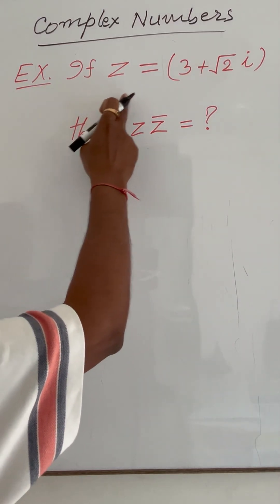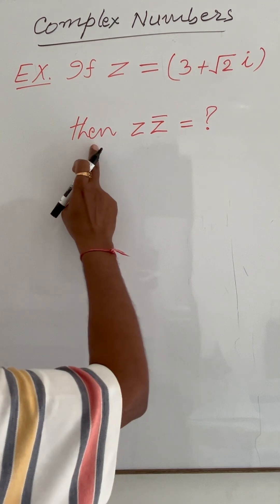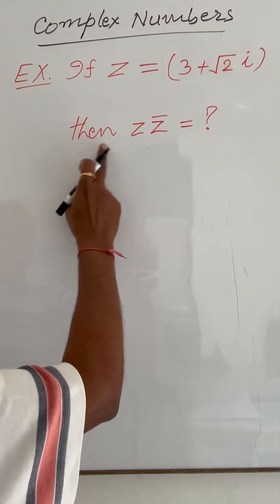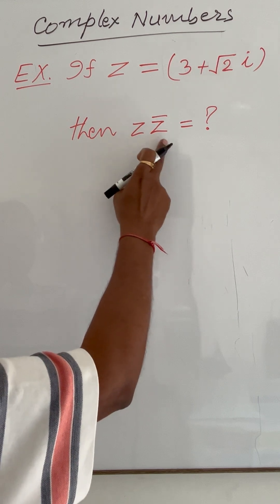Given Z = 3 + √2i, we need to find the value of Z times its conjugate, Z·Z̄.